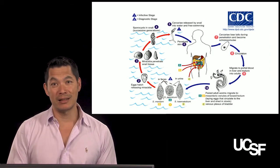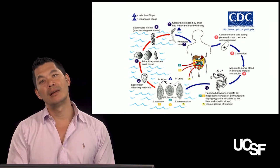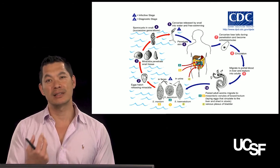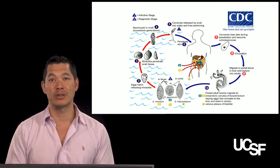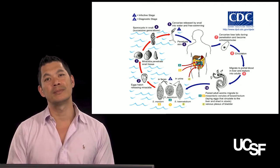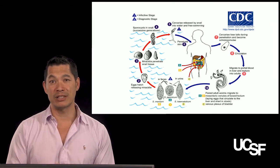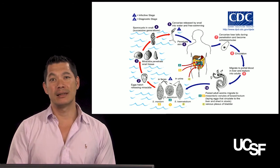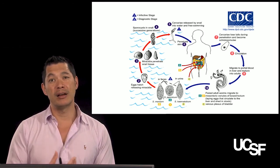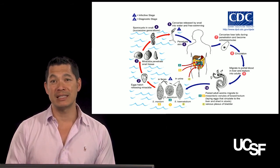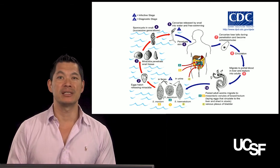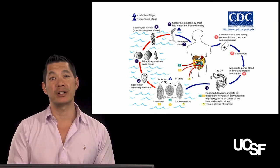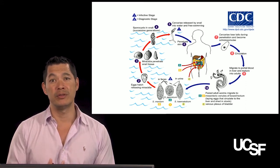The cercariae turn into larvae, which move around in the bloodstream laying eggs. The presence of the eggs and the inflammation they cause is really what causes disease. In the mesenteric venule system, that inflammation causes portal hypertension and a traffic jam in that vasculature, resulting in enlargement of the liver and spleen and varices in the GI system. Many patients can die from massive GI bleeding.